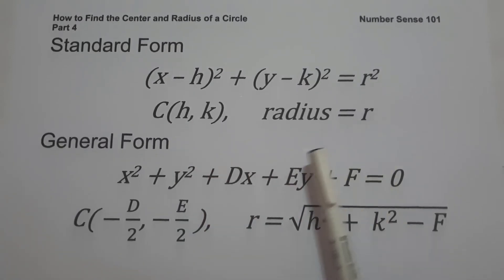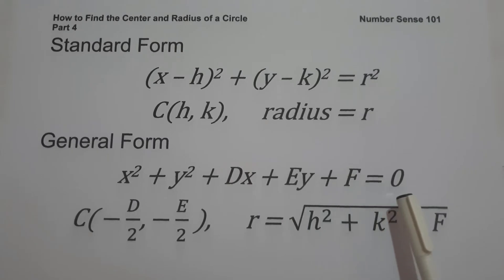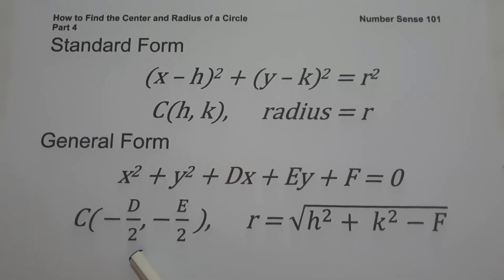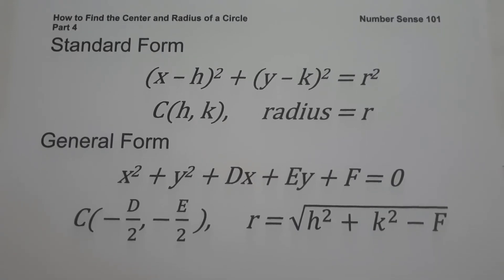The second one is the general form: x squared plus y squared plus dx plus ey plus f equals zero. To find the value of h and k in the general form, h equals negative d over 2 and k equals negative e over 2. And to find the radius, that is the square root of h squared plus k squared minus f. Those are the formulas you need to remember in order to find the center and radius of a circle.